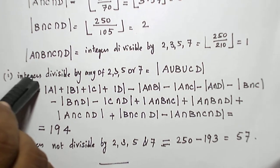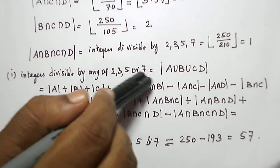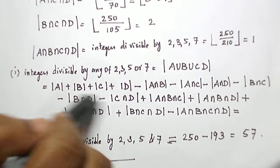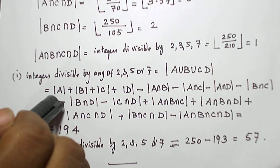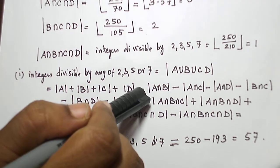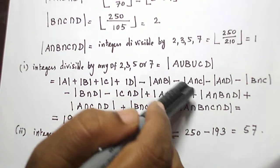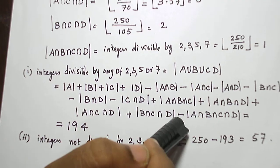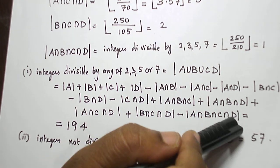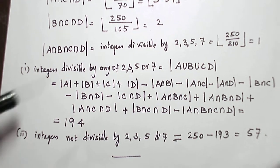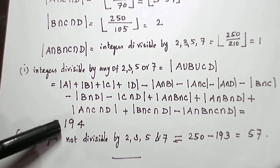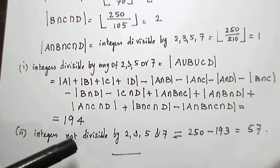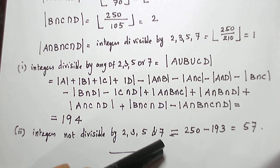The number of integers that are divisible by any one of these integers — A∪B∪C∪D — is found by the Inclusion-Exclusion Principle: sum the single-element set cardinalities, subtract the two-element intersections, add the three-element intersections, and subtract the four-element intersection. Applying all these values, we get 194. For the second part, the number of integers not divisible by 2, 3, 5, or 7 is 250 minus 194, giving 56.